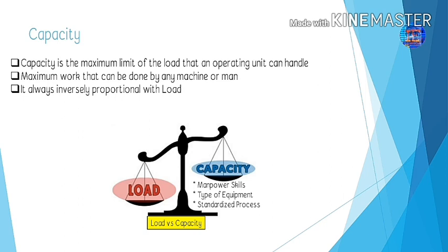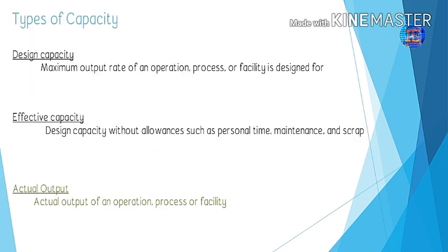The main thing to remember is that capacity is always inversely proportional to load — if our load is increasing, it means capacity is decreasing. To manage this, we need skilled manpower in sufficient quantity, upgraded equipment, and a standardized process, because without standardization we cannot get the maximum output. To increase capacity, remember these three points: skilled manpower, type of equipment, and standardized process.